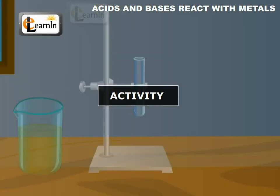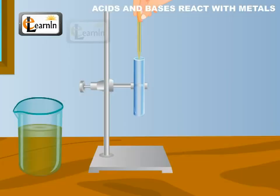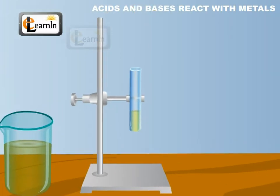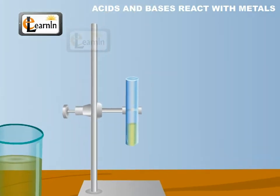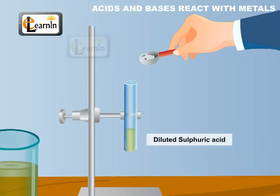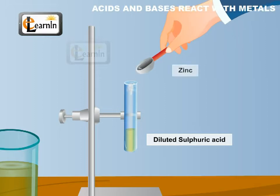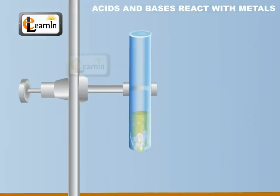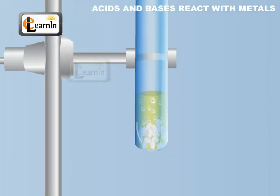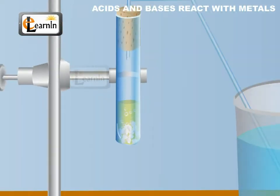Acids and bases react with metals. This activity will help us understand the chemical properties of acids and bases when they react with metals. Take about five milliliters of dilute sulfuric acid (H2SO4) in a test tube and add a few zinc granules to it. You will observe some gas coming from the surface of the zinc granules.